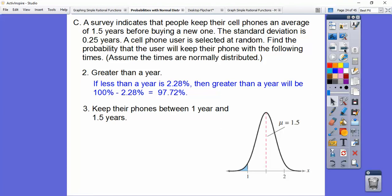How about keep their phones between 1 year and 1.5 years? That's this area right here. Here's 1 year. Here's the average 1.5 years. Well, we know that this is 50%, and this is 50%, so we're just going to take 50 minus this guy right there, and that'll be this area. So let's shade that in right there. We're looking for that area right there.